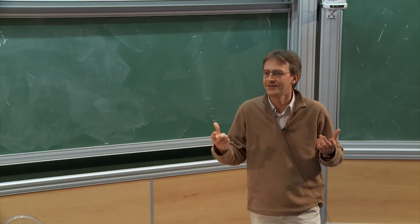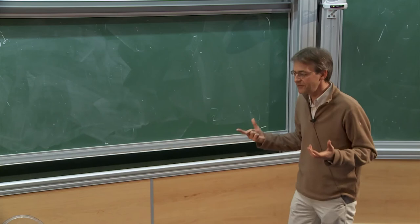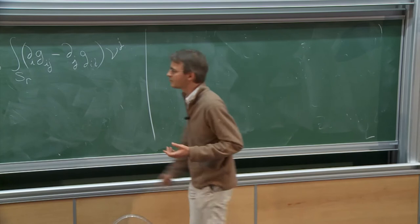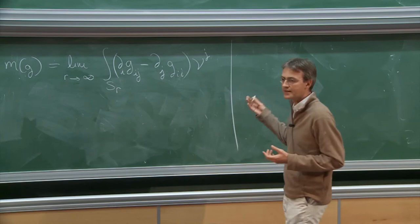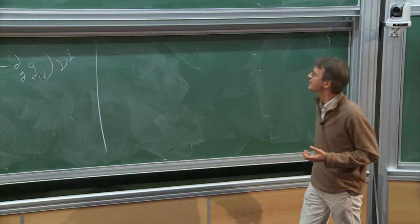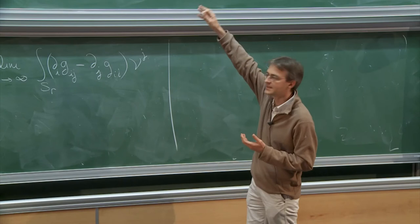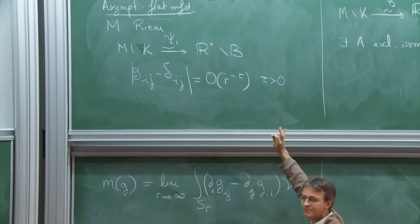And if you are a Riemannian geometer, this looks completely crazy because every Riemannian geometer knows the motto of Riemannian geometry. And the motto of Riemannian geometry is there is no geometric content in the first derivatives of the metric. The difference here is that we are around infinity, not around a point. And it turns out that this makes sense.